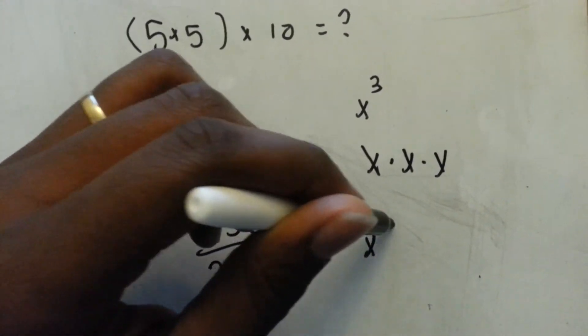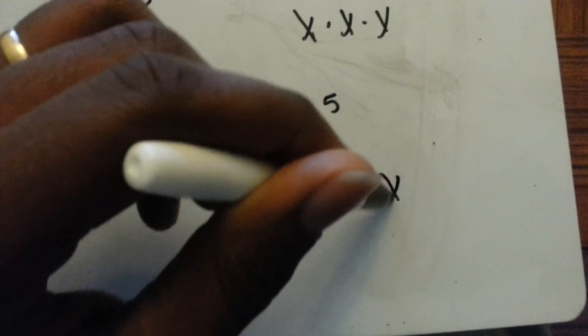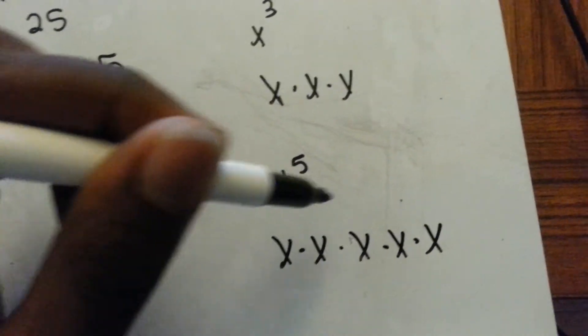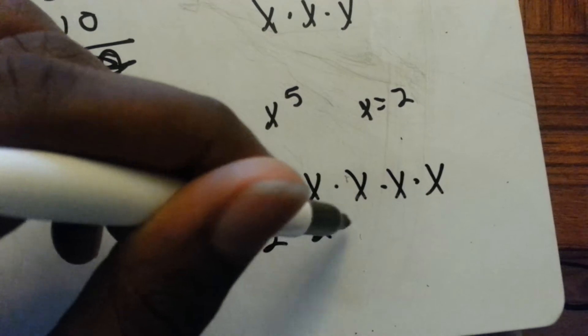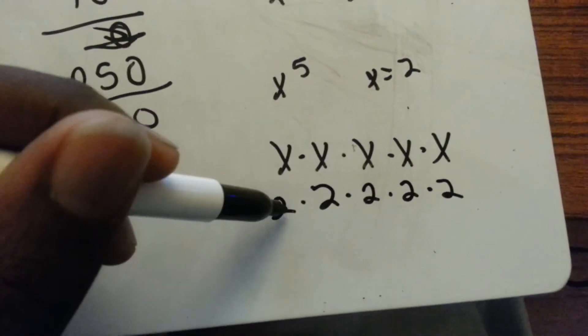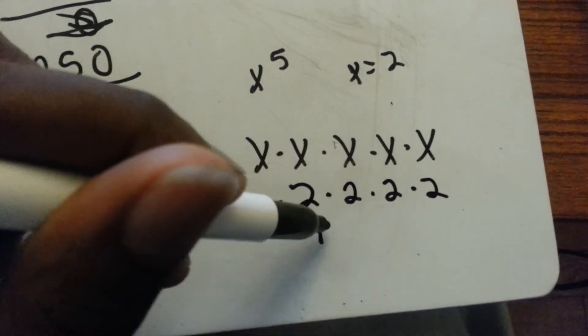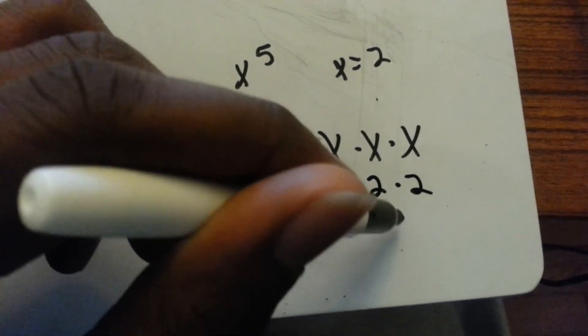If you have x to the fifth, that means x times x times x times x times x, five times. So if we have x to the fifth and x equals 2, that means 2 times 2 times 2 times 2 times 2. Solving it out: 2 times 2 is 4, 4 times 2 is 8, 8 times 2 is 16, 16 times 2 is 32.